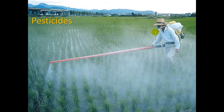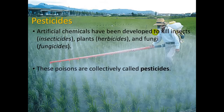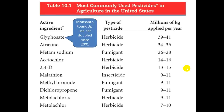Let's take a look at pesticides, another component of the Green Revolution. These are artificial chemicals developed to kill insects (insecticides), plants (herbicides), and fungi (fungicides) — all together called pesticides. There are now over a thousand different types of pesticides produced. One at the top of the list is Monsanto Roundup, whose scientific name is glyphosate. Its use has doubled since 2001, largely through the sale and use of their Roundup-resistant genetically modified crops.